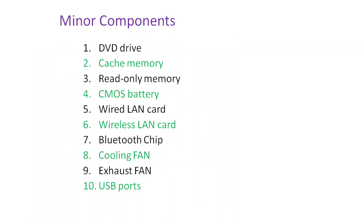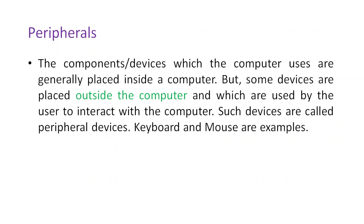Minor components include DVD drive, cache memory, read-only memory, CMOS battery, wired or wireless LAN card, Bluetooth chip on the motherboard, cooling fan, exhaust fan, USB ports, etc. These can be considered as minor components of a computer, though that list is not exhaustive — you can add other components also.